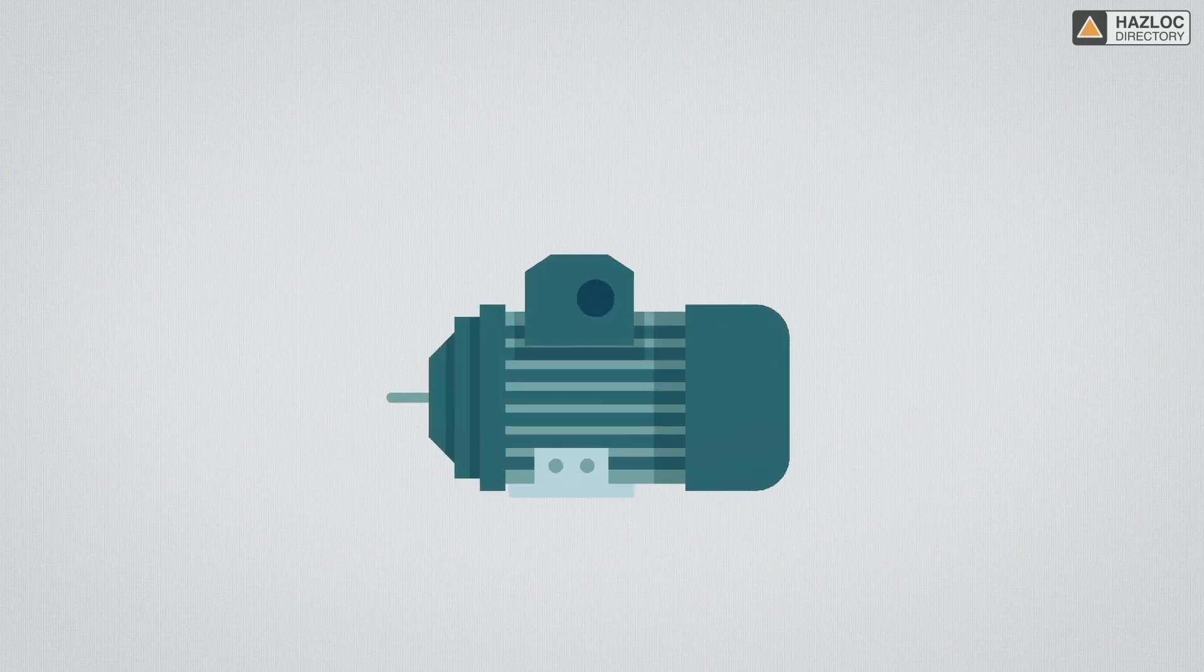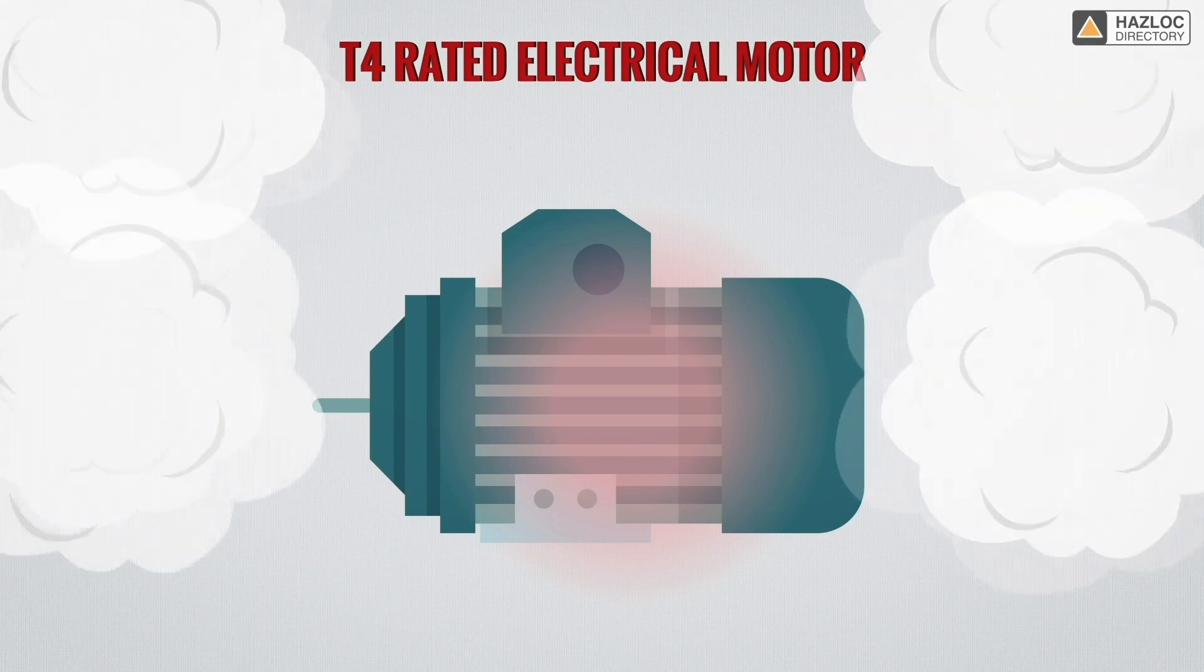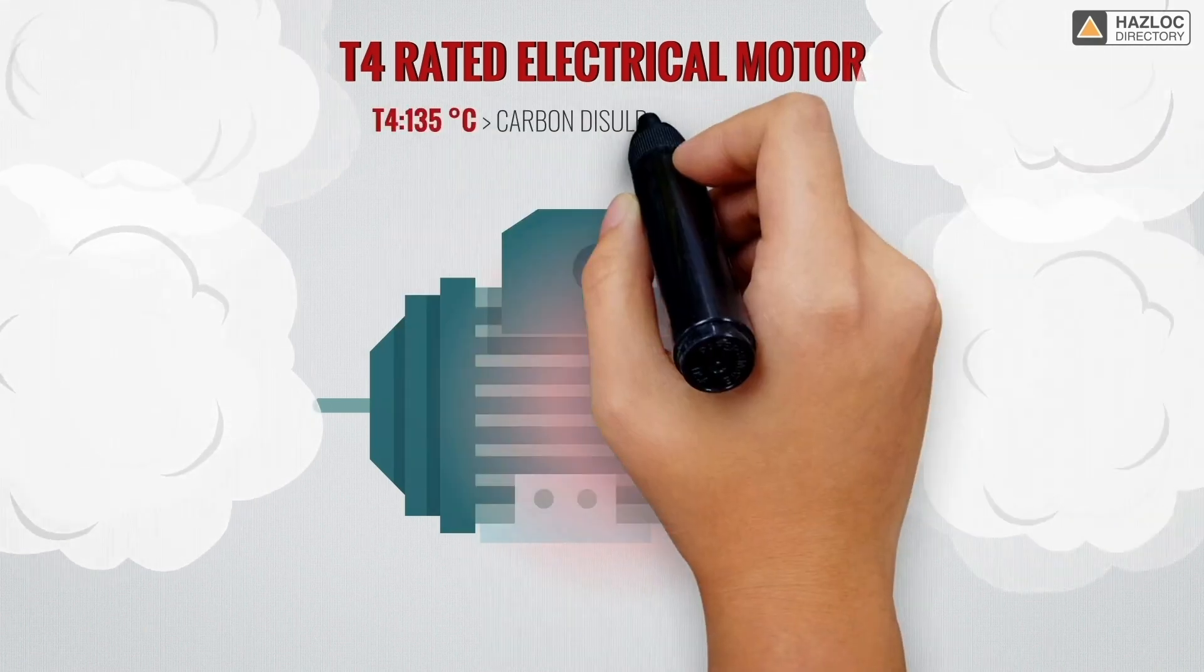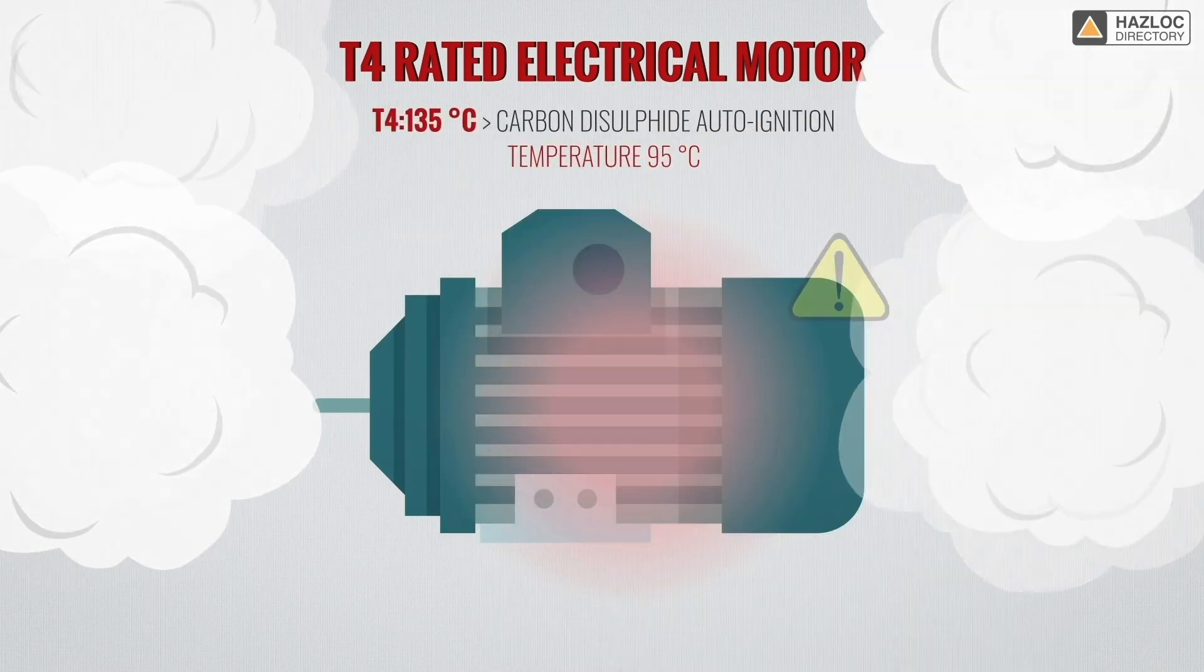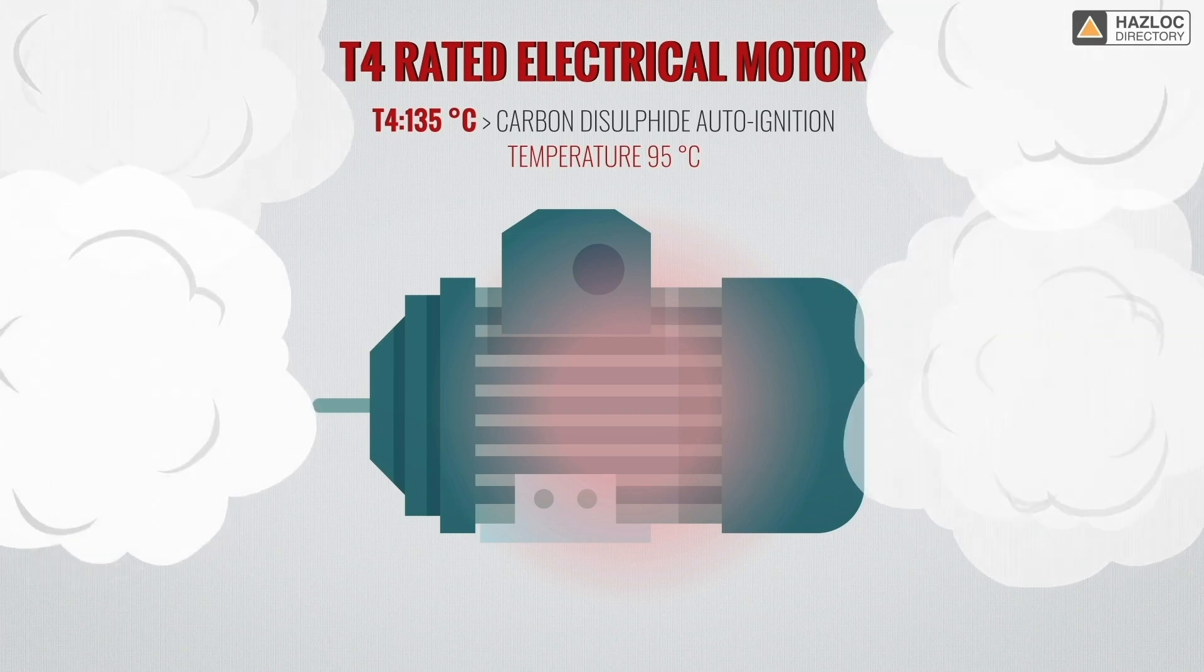Let's use an example to clarify these concepts. We have an electrical motor rated as T4 for installation in a hazardous location. If this motor were installed in a location in which carbon disulfide with an auto-ignition temperature of 95 degrees is present, the result would be an explosion.